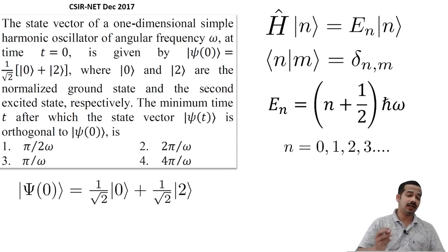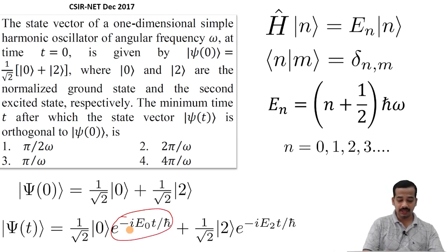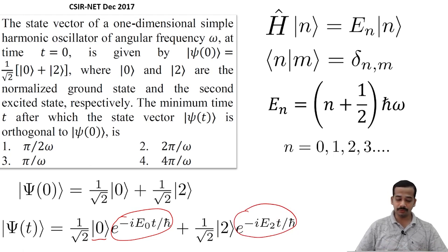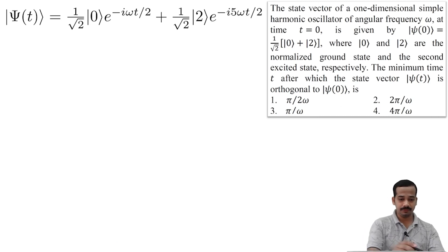The initial state is already written in terms of energy eigenstates. The state at later time t can be written by multiplying e to the power minus i E-naught t by h-bar with |0⟩, and e to the power minus i E2 t by h-bar with |2⟩. When we substitute E-naught and E2, we end up with the time-evolved expression.